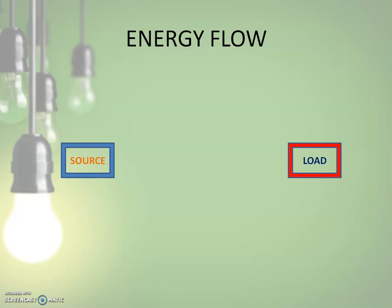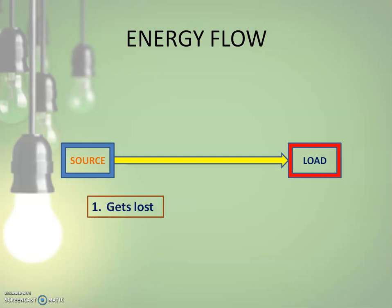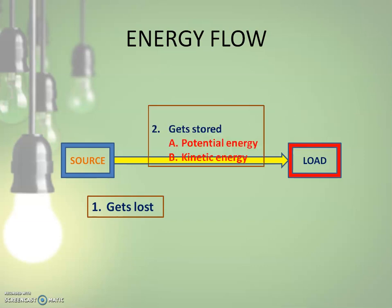Energy flows from the source to the load — by the flow of energy I mean the flow of current from the source to the load. Many things may happen to energy during its passage from the source to the load. The first thing that may happen is that it may get lost — that is, it becomes unavailable to the load, so some part of energy is lost during its passage from the source to the load.